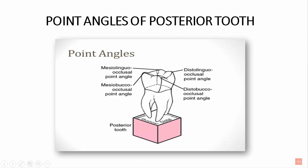For posterior teeth, the point angles are: mesiolingual occlusal, mesiobuccal occlusal, distolingual occlusal, and distobuccal occlusal point angles. So there are four point angles in the posterior teeth.